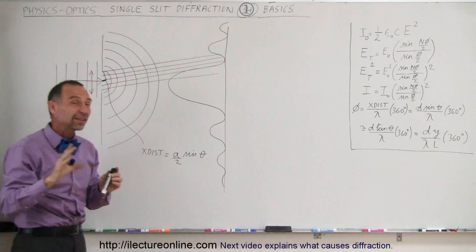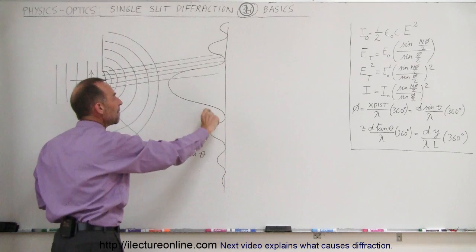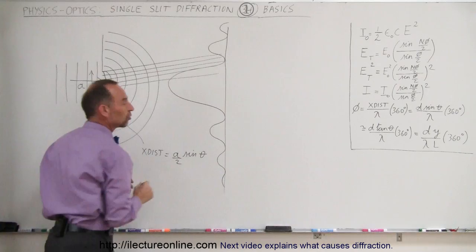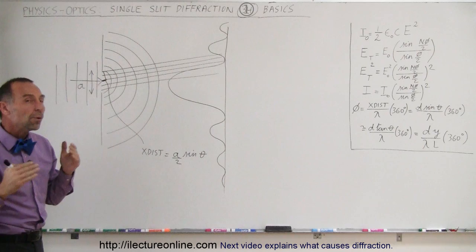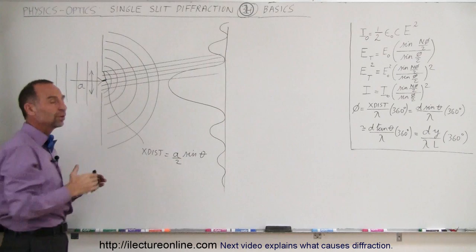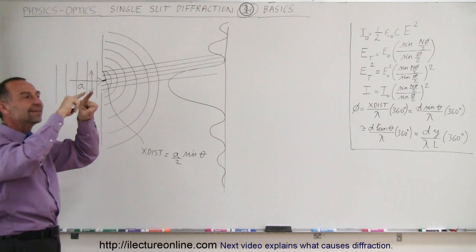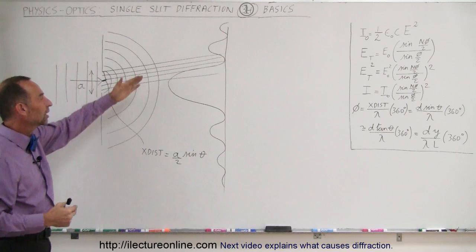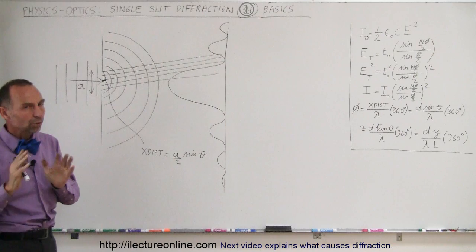Notice that the diffraction pattern decreases in intensity. The maxima, as you go further and further out away from the central maximum, become smaller and smaller, meaning the intensity decreases as you go further out. What we will see later is that when we combine the diffraction properties of light with the interference properties of light with multiple slits, we have to take that into account — the intensity of the interference peaks will diminish because of the diffraction pattern overlaid with the interference pattern.